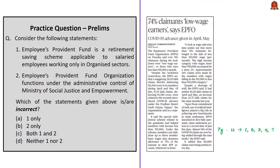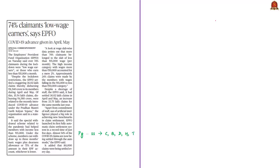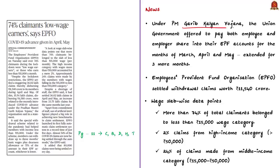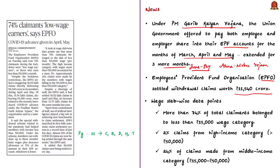This question is based on a news article about the central government under Pradhan Mantri Garib Kalyan Yojana offering to pay both employee and employer share into EPF accounts for March, April, and May, later extended under Pradhan Mantri Atma Nirbhar Yojana for June, July, and August. The Employees Provident Fund Organisation (EPFO) settled withdrawal claims worth around ₹11,500 crores during April and May. Analysis of slab-wise wage data found that more than 74% of total PF claimants during the lockdown period belong to the slab of less than ₹15,000 wages.